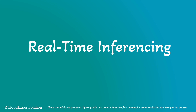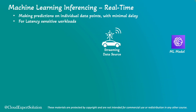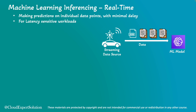Next, we will review real-time inferencing. For real-time inferencing, the machine learning model makes predictions on individual data points instantly. Real-time inferencing is ideal for latency sensitive workloads. For example, consider a streaming data source like a self-driving car — the data source is sending continuous data points to the machine learning model. This is called streaming data, and the machine learning model instantly processes the data and generates output.